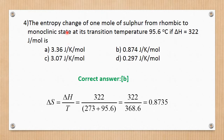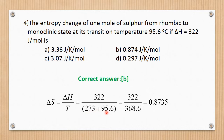Question number 4. The entropy change of one mole of sulfur from rhombic to monoclinic state at its transition temperature 95.6°C, if delta H equals 322 joules per mole. The entropy change formula is delta S = delta H / T. Delta H is 322 J/mol and T is 95.6°C (273 + 95.6). The correct answer is B.